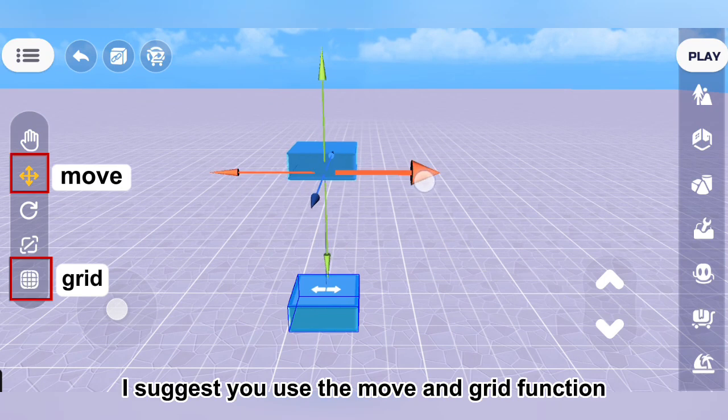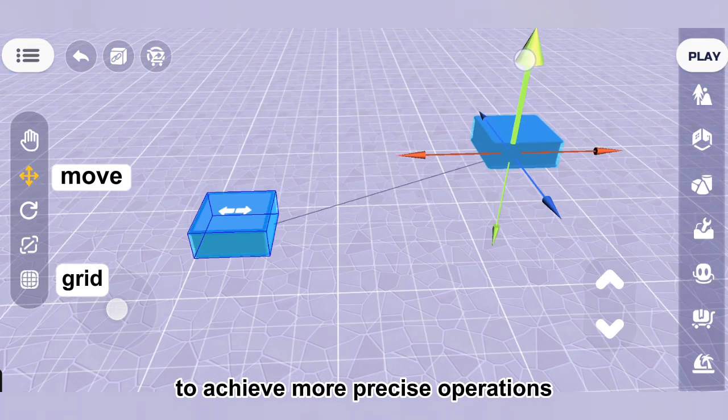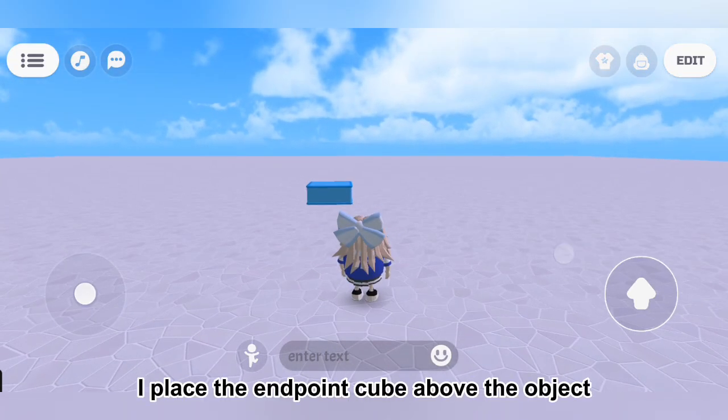I suggest you use the move and grid function on the left when adjusting the position to achieve more precise operations. I placed the endpoint cube above the object and it can move upward.